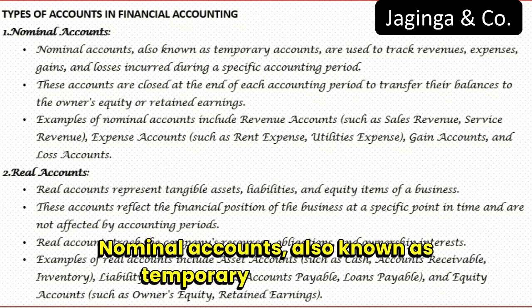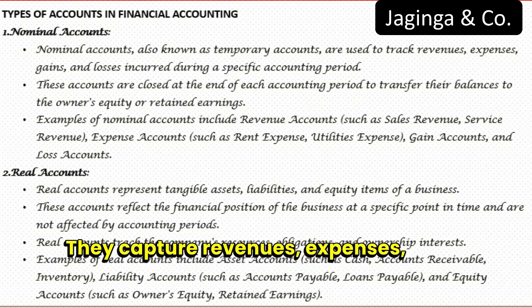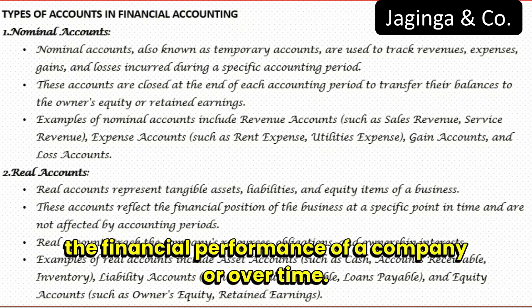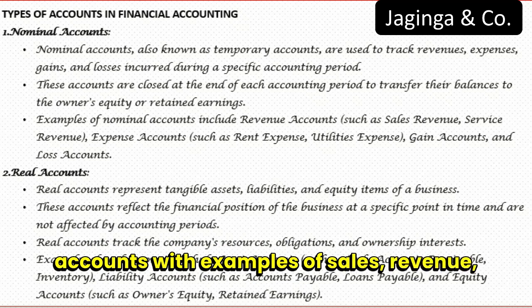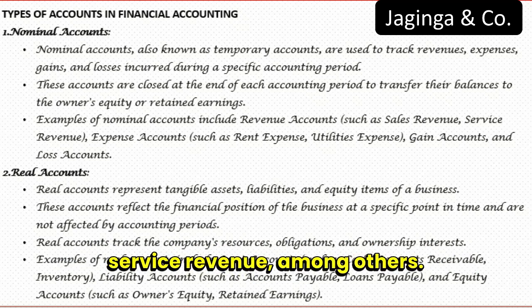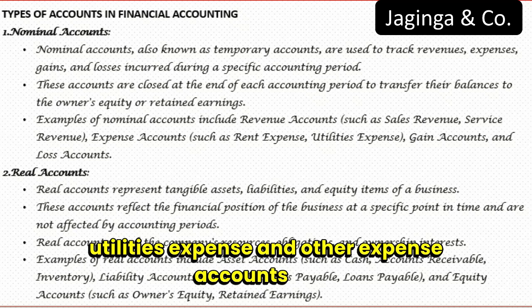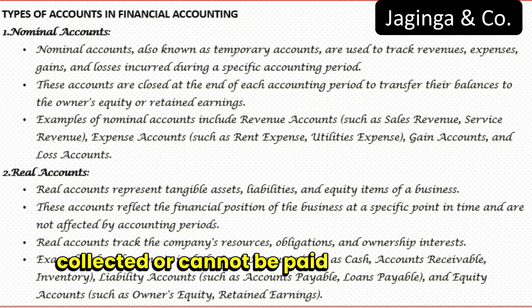Nominal accounts, also known as temporary accounts, are like travellers passing through the accounting cycle. They capture revenues, expenses, gains and losses incurred during a specific accounting period. Think of them as the accounts that help us measure the financial performance of a company over time. Examples include revenue accounts such as sales revenue and service revenue; expense accounts like rent expense and utilities expense; gain accounts like gain on sale of assets; and loss accounts like loss on bad debts. Bad debts are receivables that cannot be collected or paid by customers.